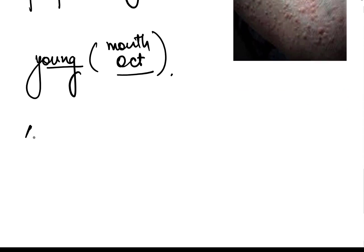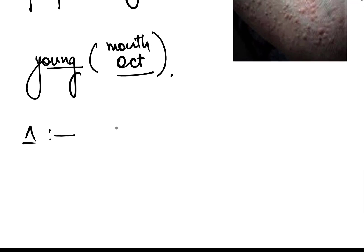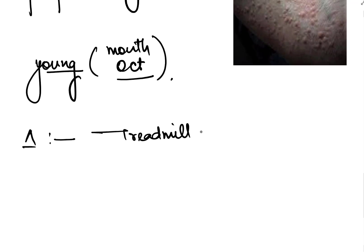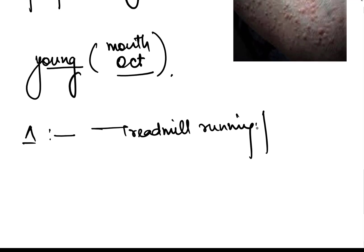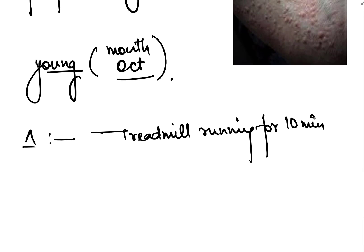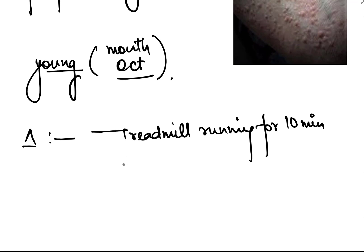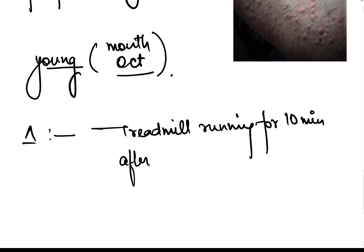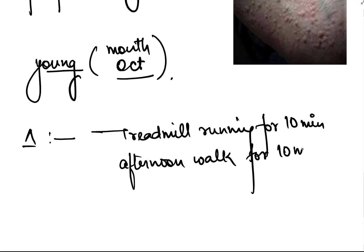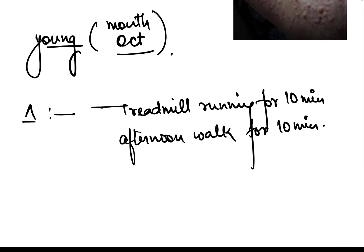If you want to confirm the diagnosis, it can be confirmed by either the treadmill running test — where we ask the patient to run on a treadmill for 10 minutes, which increases the core body temperature and precipitates cholinergic urticaria — or you can ask the patient to go for an afternoon walk for 10 minutes, again causing body temperature increase due to sun exposure.